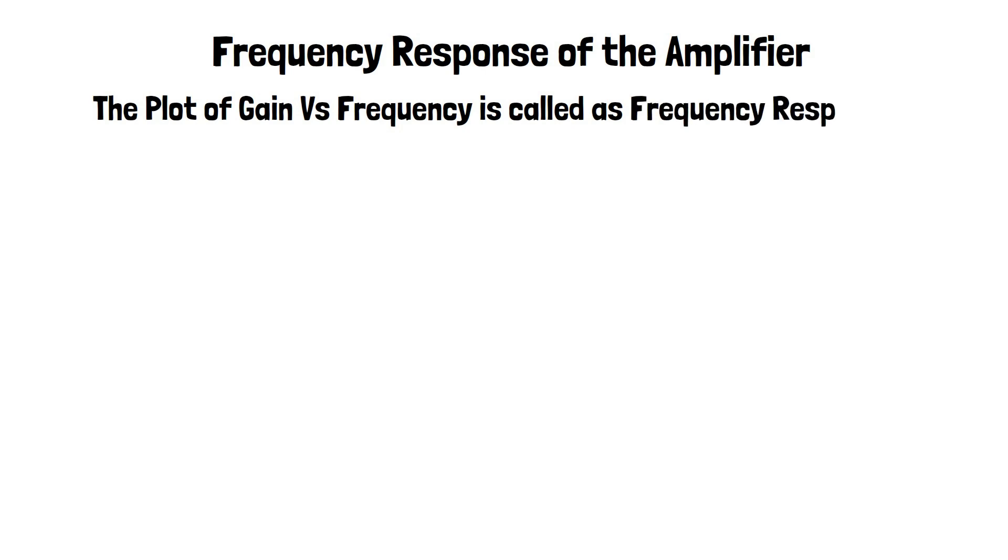Frequency response of the amplifier. The plot of gain versus frequency is called as frequency response. It indicates how the transistor amplifier responds to different frequencies. The functionality of the capacitors for different frequency regions is as shown below.